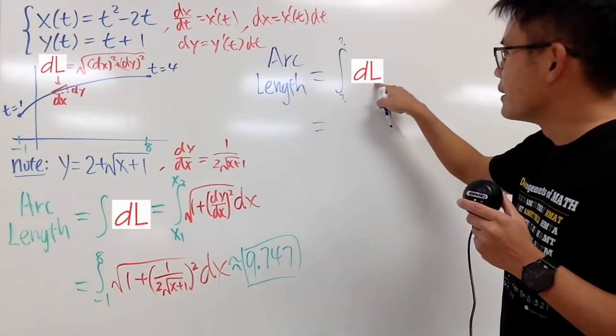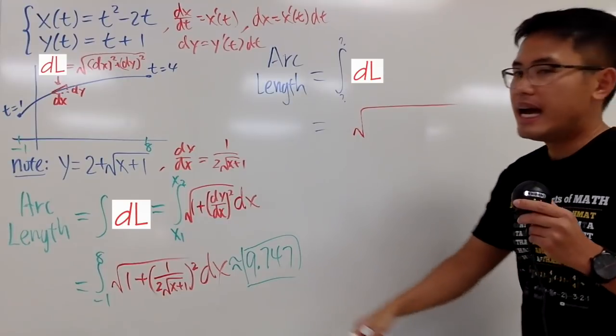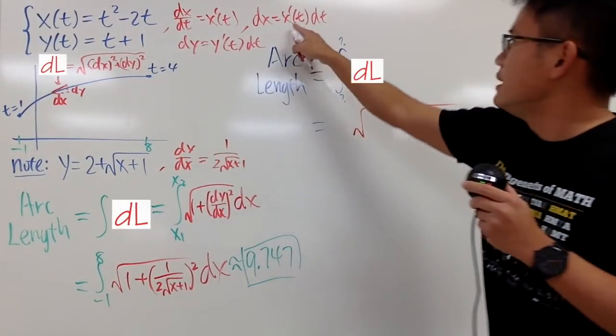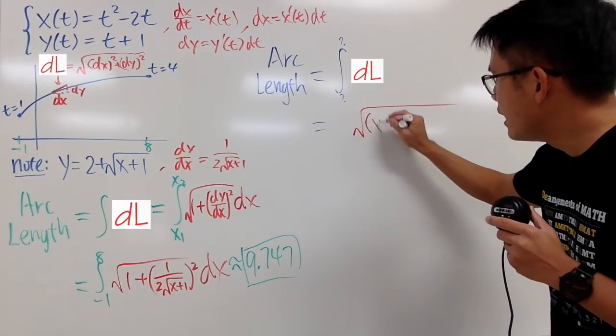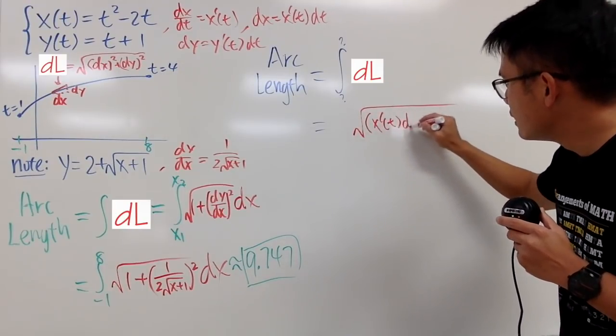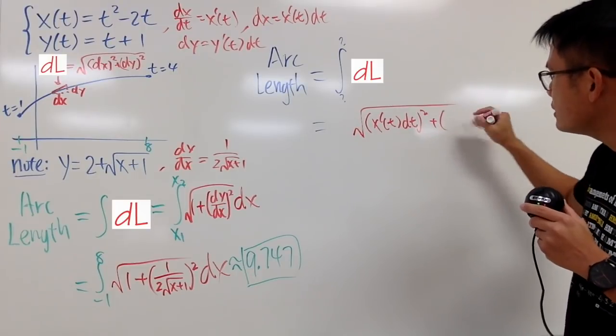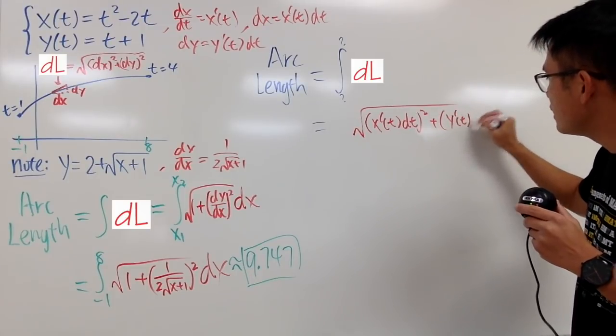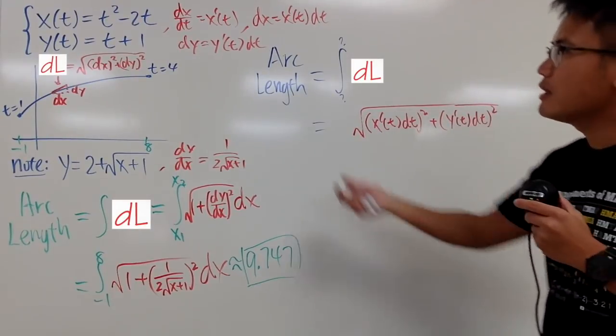So you will see that for the dL, it's going to be the square root. And for the dx, it's this thing in the parentheses, and you square that. So we put the parentheses, x' dt, and you square that. And then we add it with parentheses, y' dt, and we square that. And this right here is for the dy.